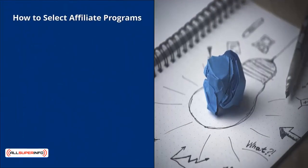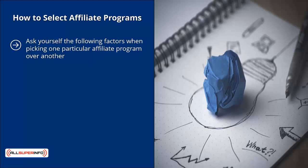How to sell affiliate programs. Ask yourself the following factors when picking one particular affiliate program over another. Is the offer directly or closely related to your niche? Look at a program's offers, not necessarily the program itself. There are many programs that actually cater to many different niches, so you have to look through their offers to see if there is something that tightly fits your niche.